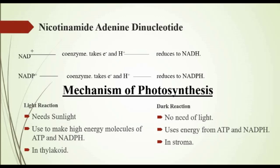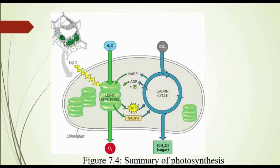Figure 7.4 shows the summary of photosynthesis. Light is trapped by the thylakoid, water molecules are utilized in this reaction, and oxygen is produced. Conversion of NADP and ADP into NADPH and ATP can also be seen here. Dark reactions are shown in a circle where CO2 is utilized and glucose is formed.